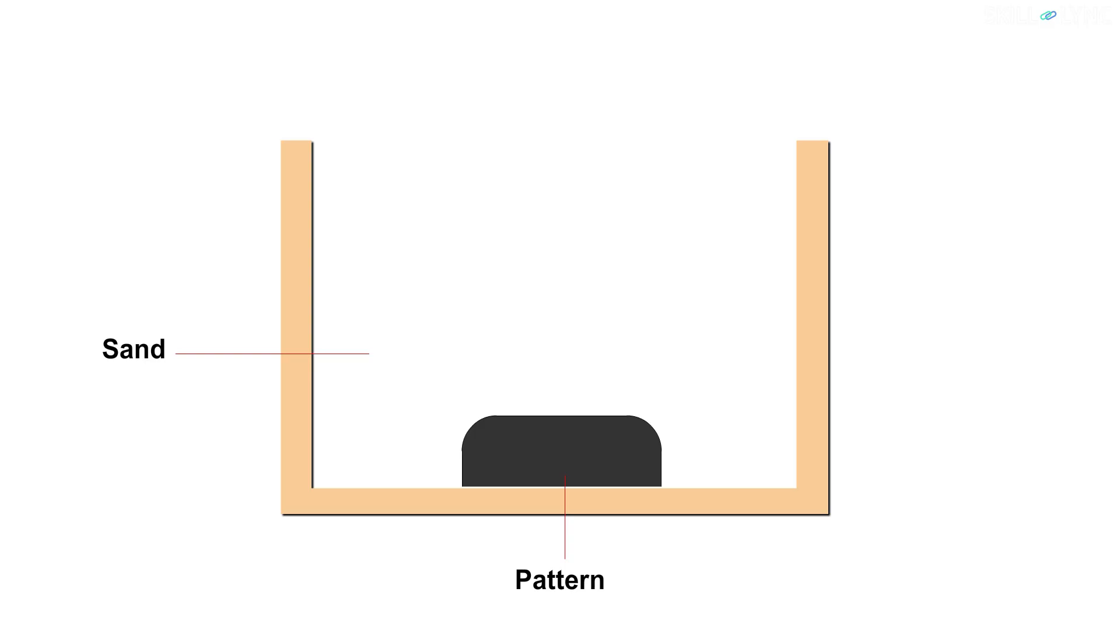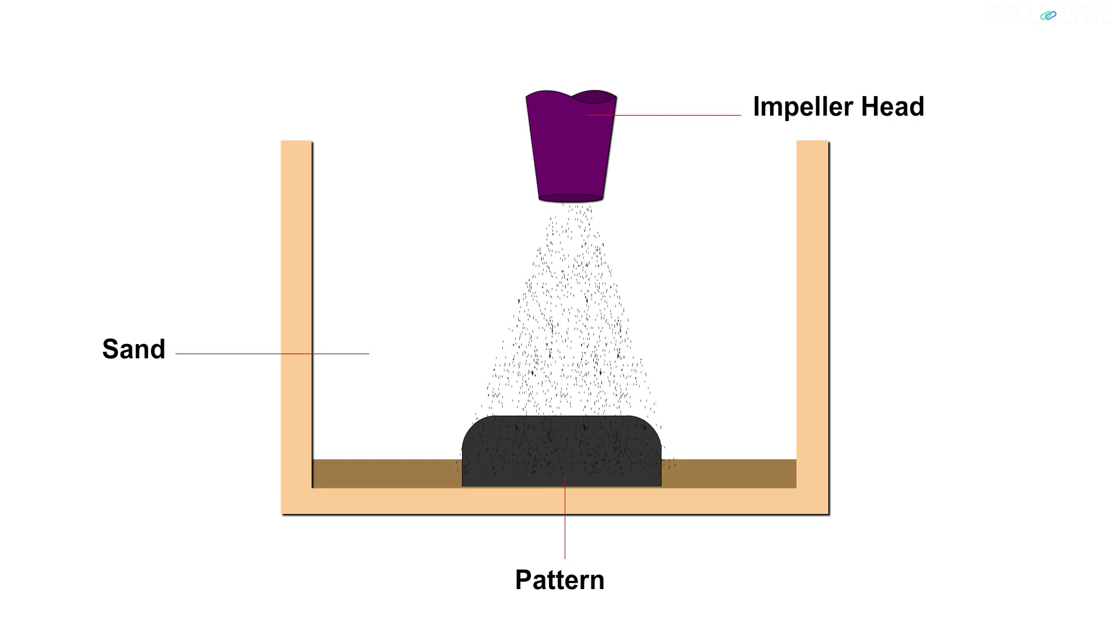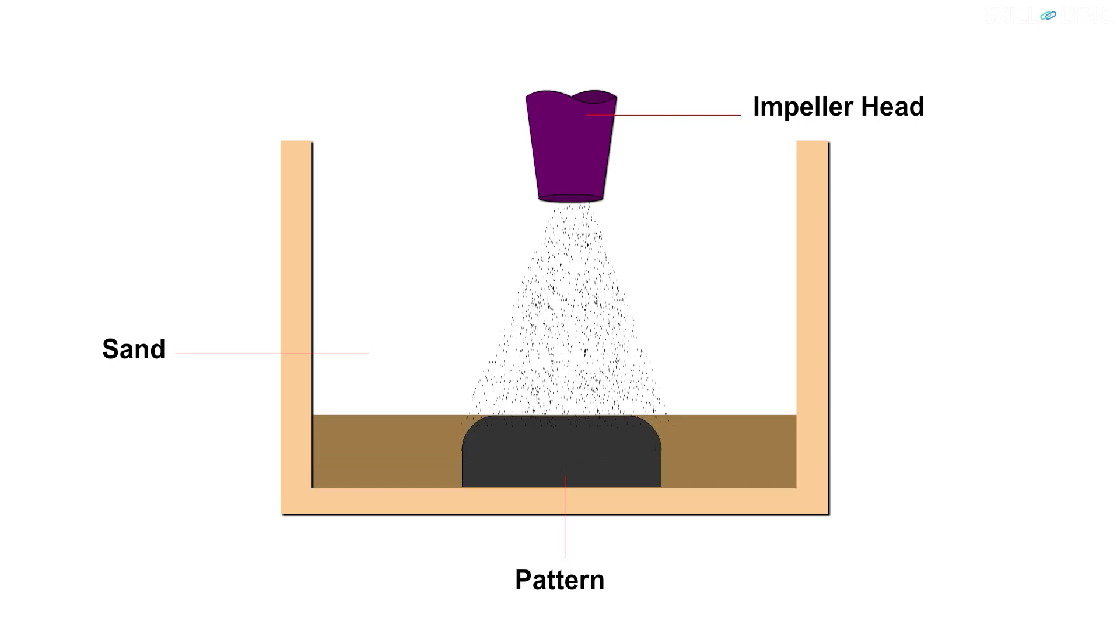Next comes the sand slingers. These machines fill the molding flask with sand at a uniform rate under high pressure. They are usually automated and large flasks are filled using them.